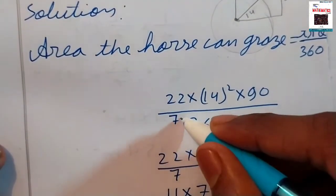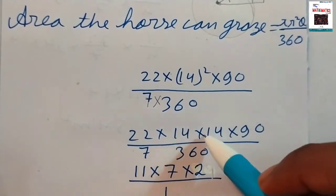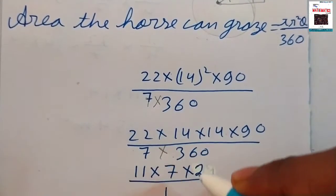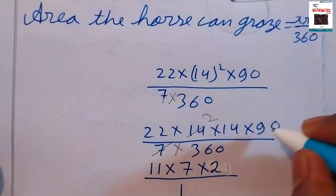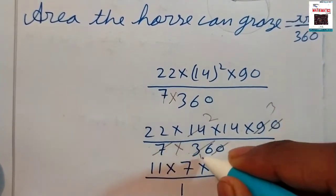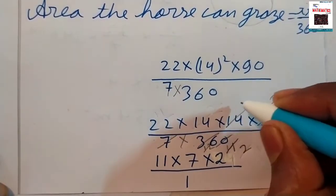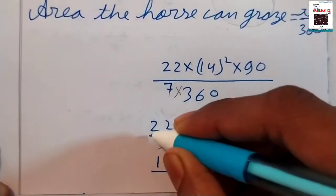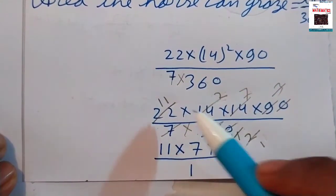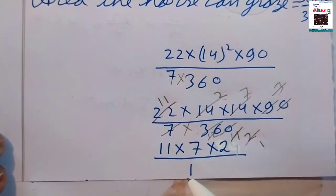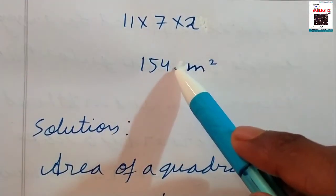Substituting: 22/7 into 14 squared into 90/360. We have 14 into 14, and 90 over 360 simplifies to 1/4. Cancelling 7 into 14 gives 2, and further cancellation gives 11 into 2 into 7, then 11 into 14. This equals 11 into 14 equals 154 meter square.